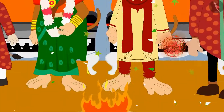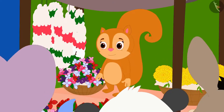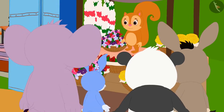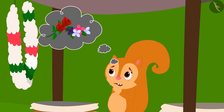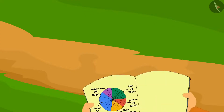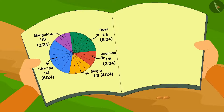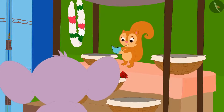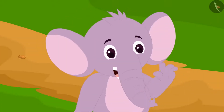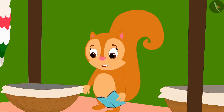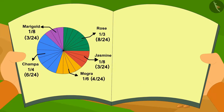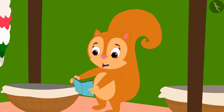With the wedding season in Champapur, Chanda is getting a lot of orders to decorate the wedding pavilion with flowers. Chanda is wondering which of her flowers people like the most. To find out, Chanda created a pie chart by looking at the record of flowers used in previous orders. When Appu came to Chanda's shop, he asked about the pie chart. Chanda explains, 'This shows the popularity of my flowers. According to this, the largest part is Champa flowers, which means Champa flowers are the most popular.'